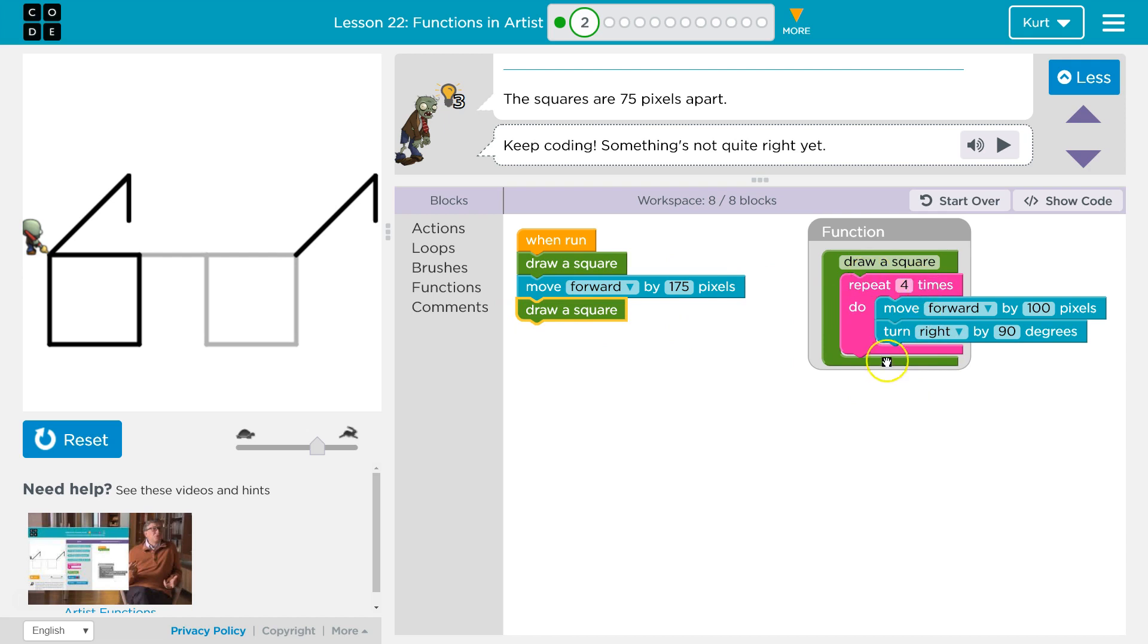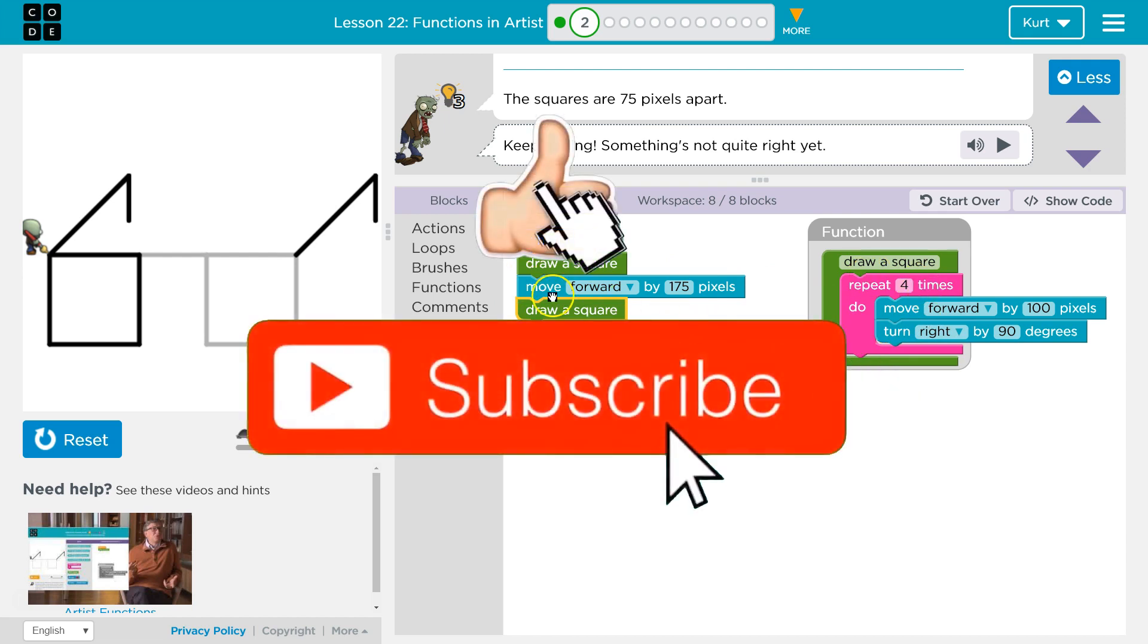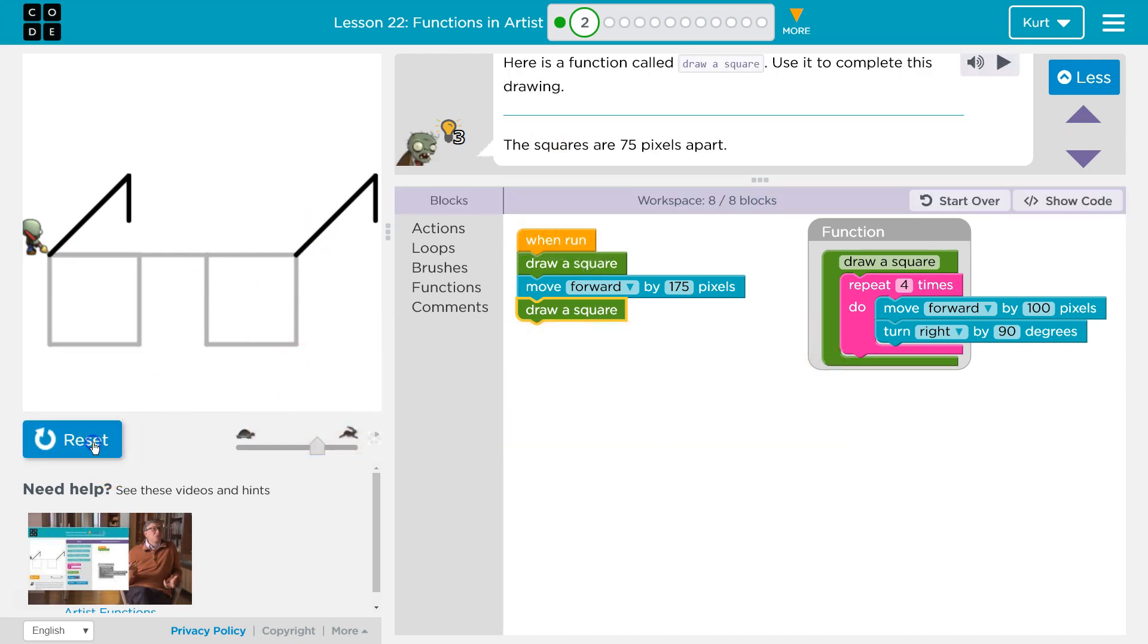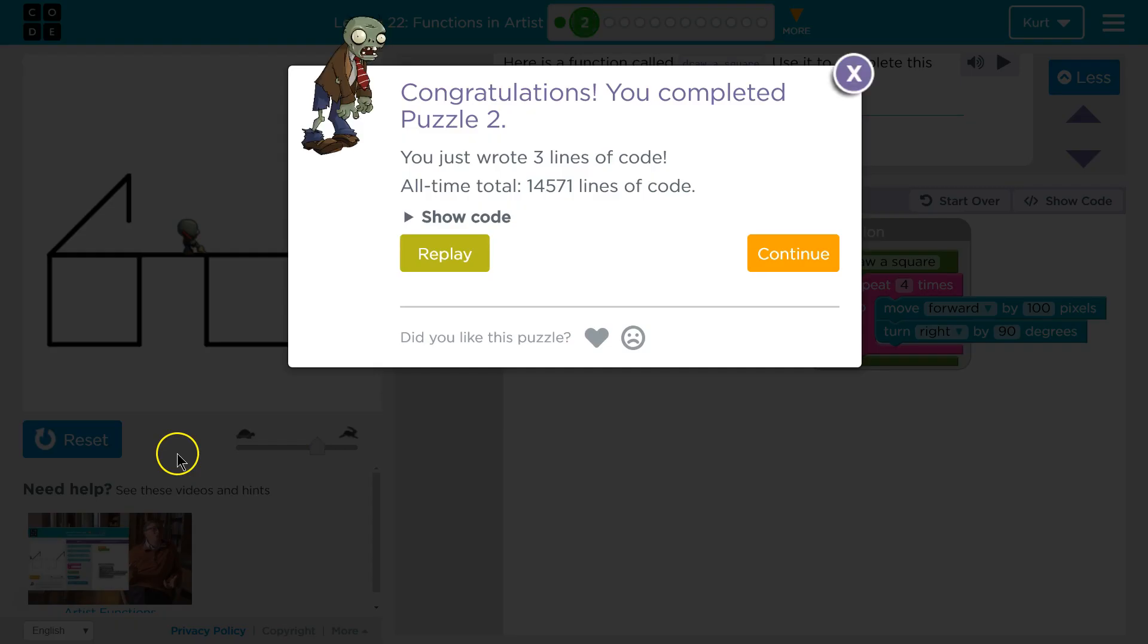So we'll draw a square. Once it repeats that four times, we're at the bottom of our function. We're going to move forward by 175, and then draw another. Let's see. Ta-da! Let's keep going.